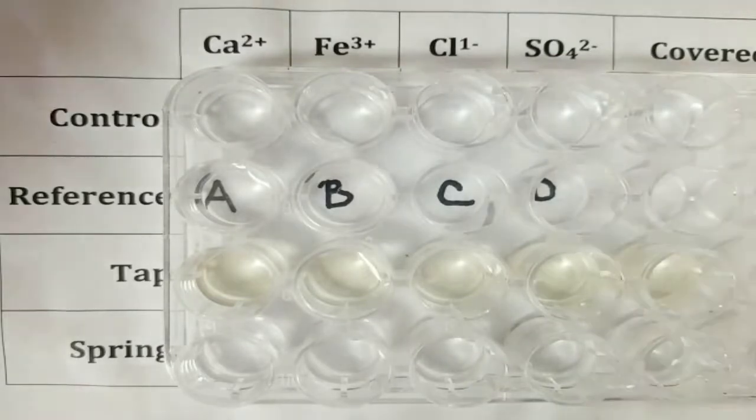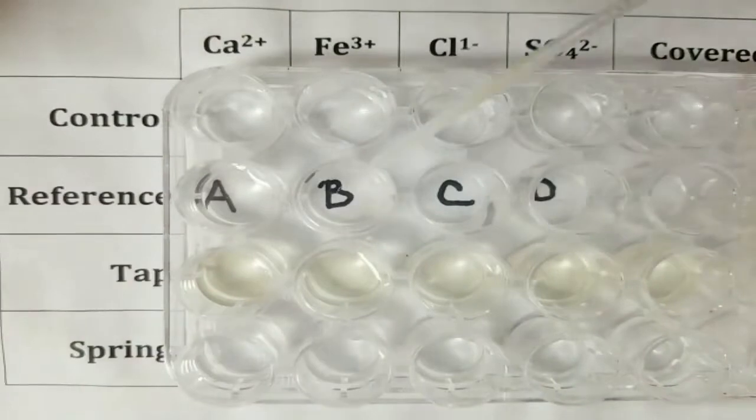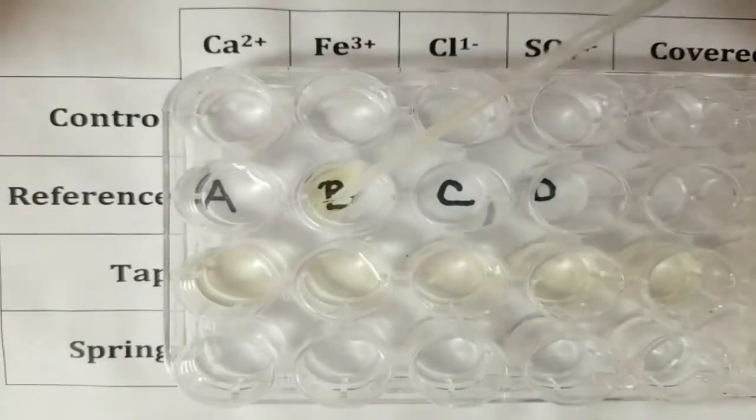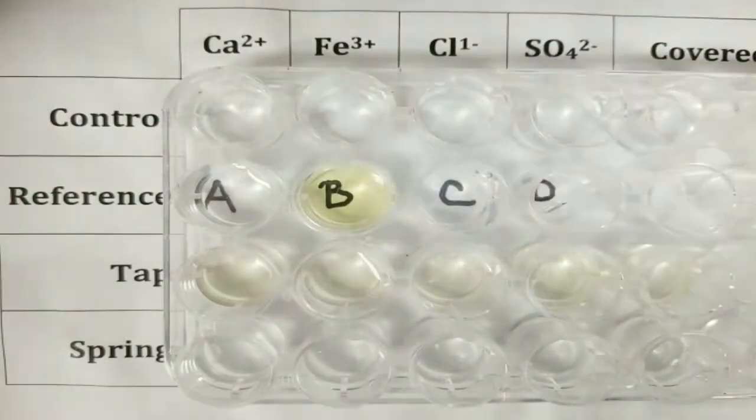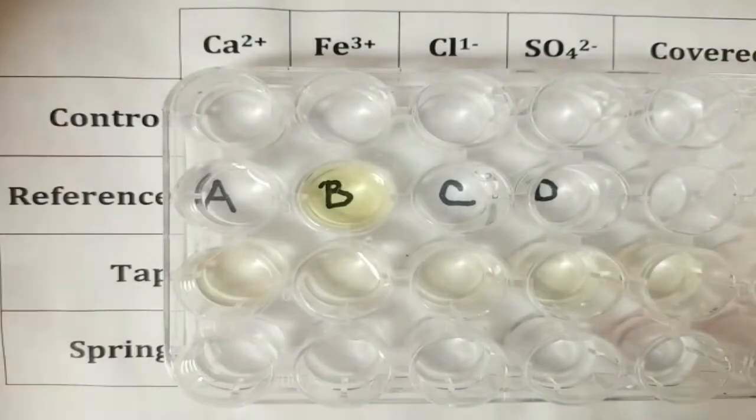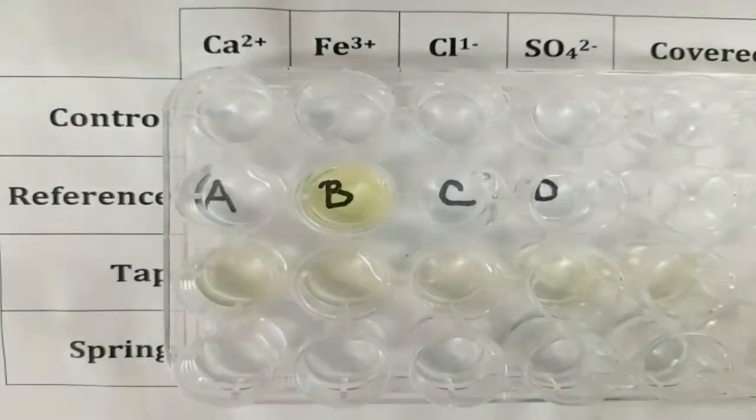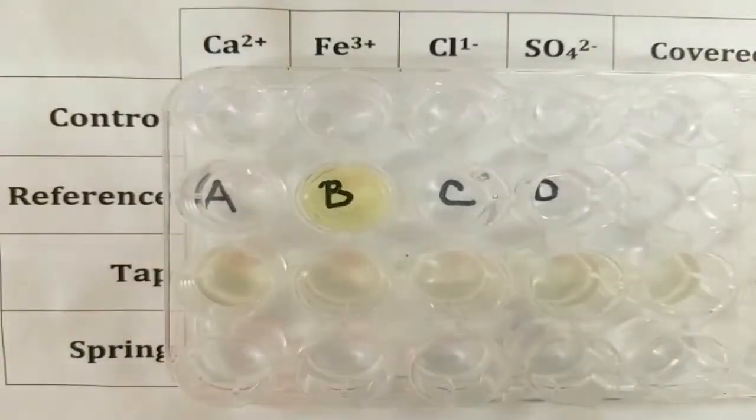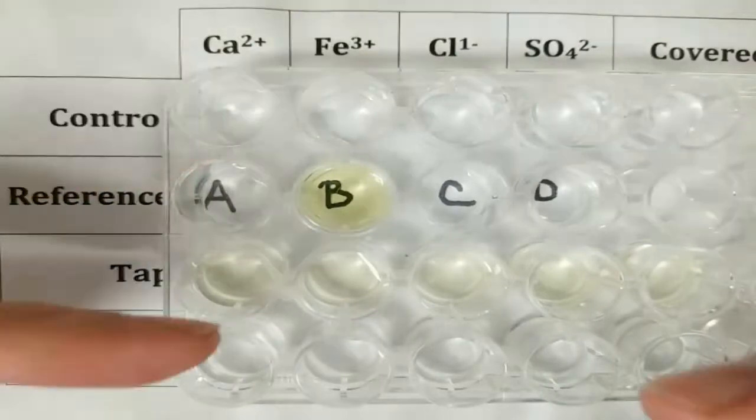And then I am going to repeat the same for all the other references. I am going to do iron. Make sure you are putting in the right wells. Now as you can see, the iron reference is already a bit yellowish. So that is okay. That is just how it is. So now every one of these wells has 20 drops in.